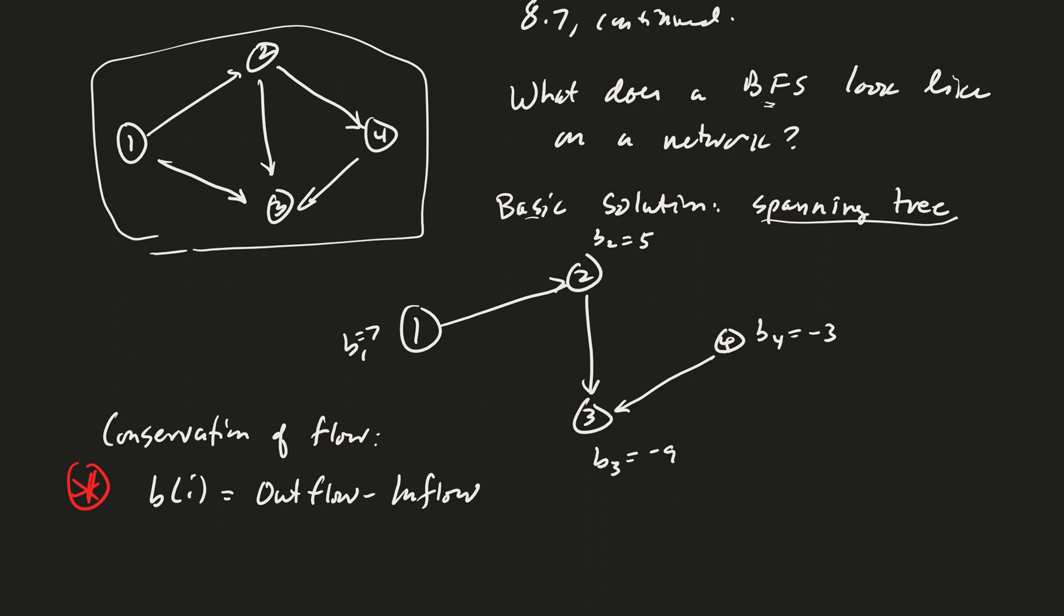So in this case, let's see, this is going to be for B1, right, we'll have B1 is equal to just the outflow, right, edge 1, 2. And so therefore, 1, 2 is going to be equal to 7, right?